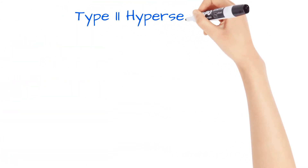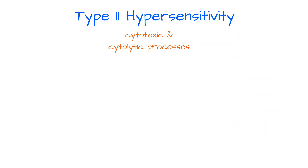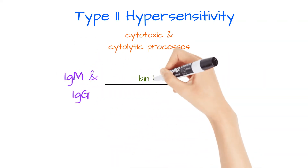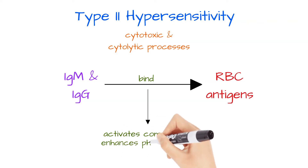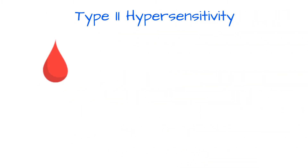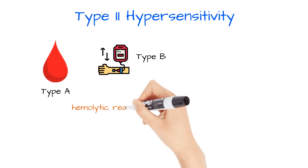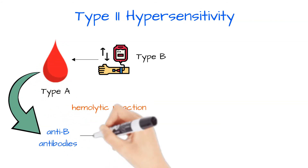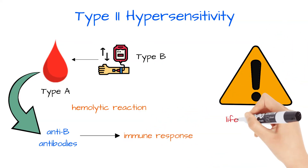Type 2 hypersensitivity reaction involves cytotoxic and cytolytic processes and is associated with ABO incompatibility transfusion reactions. The antibodies IgM and IgG bind with red blood cell antigens, and this activates the complement system and enhances phagocytosis. If a patient has type A blood and they receive a transfusion from a donor who has type B blood, then a hemolytic reaction will take place. The recipient with type A blood has anti-B antibodies, and those antibodies begin the immune response against the foreign blood cells, which can lead to serious life-threatening complications.